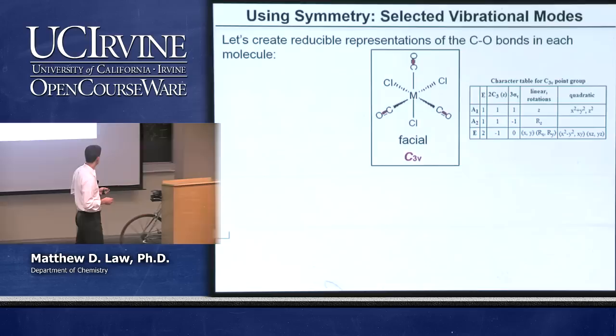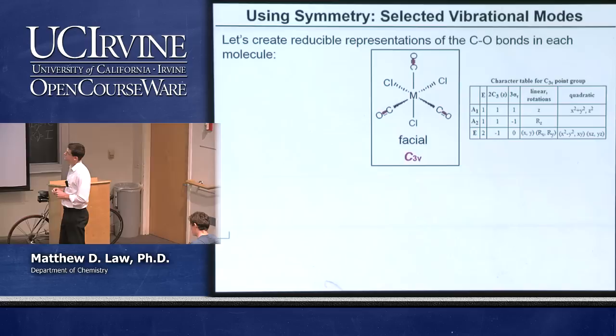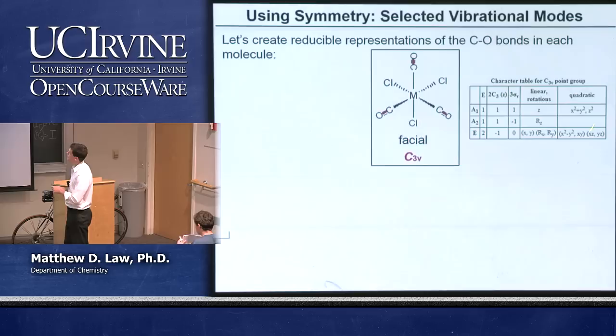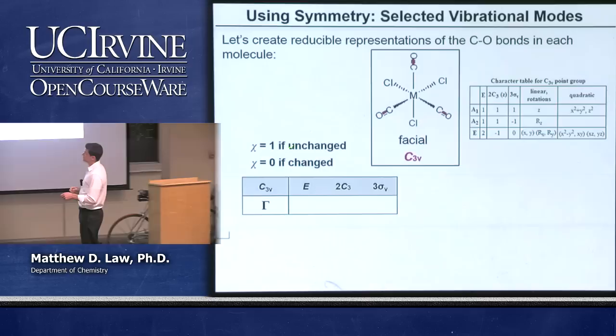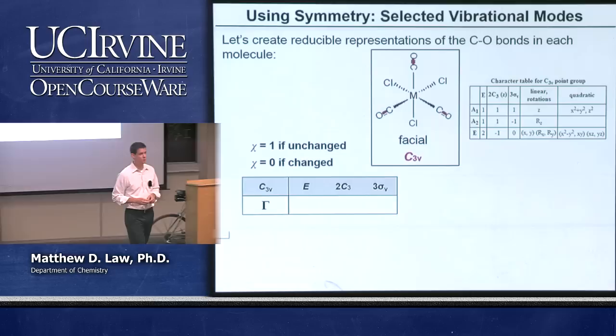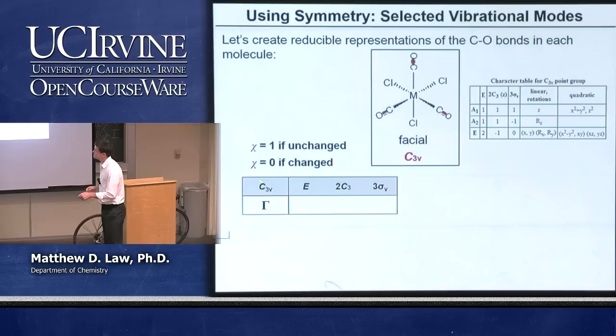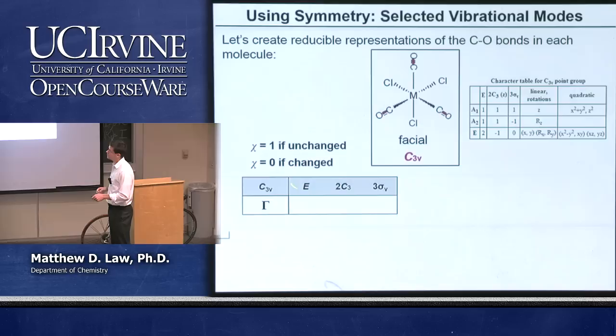We went through this first isomer last time, but we'll walk through it again. We look at generating the reducible representation for these three vectors, bringing up the C3V character table. Remember: if the vector is unchanged, we assign it a character of 1; if the vector is changed in any way, we assign it a character of 0. In this point group, those are the only two options.